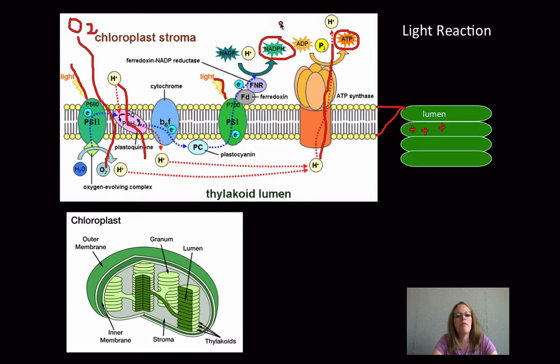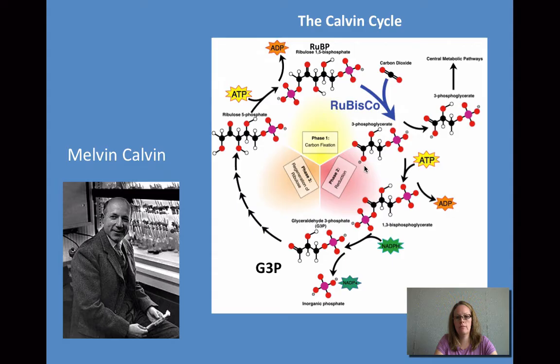We have positive charges building up inside in the lumen. Those charges are then leaving through a channel called the ATP synthase and creating ATP. So our products for the light reaction are NADPH and ATP.